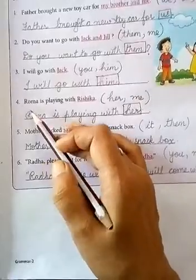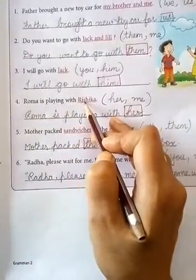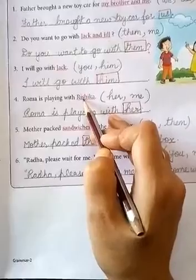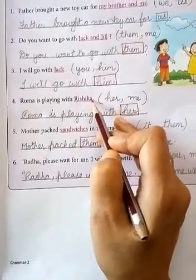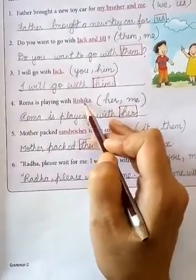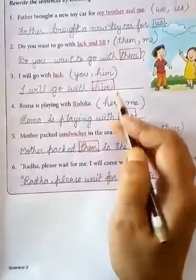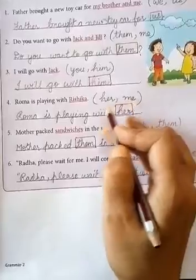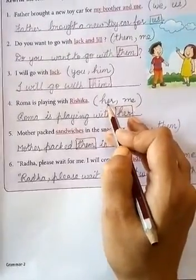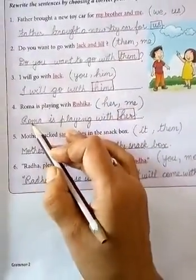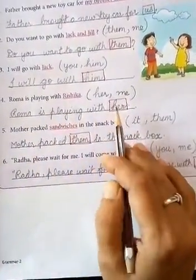Number four. Roma is playing with Rishika. Now what is underlined? Rishika. Rishika is a name of a girl. So out of the two given pronouns, we can choose her. Roma is playing with her.